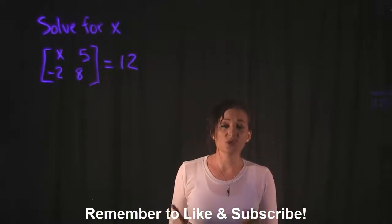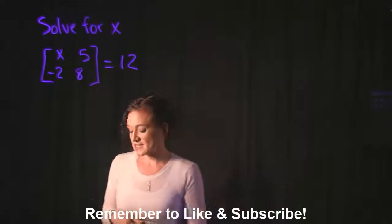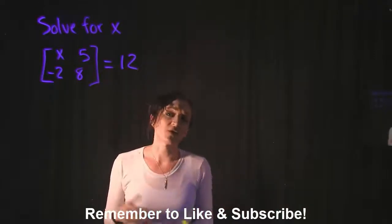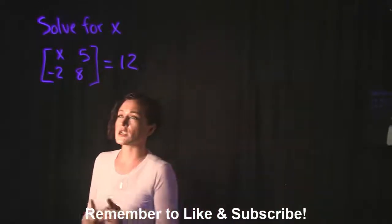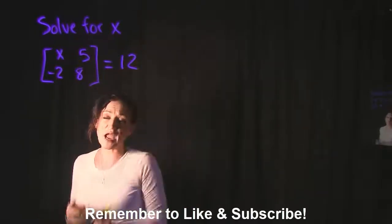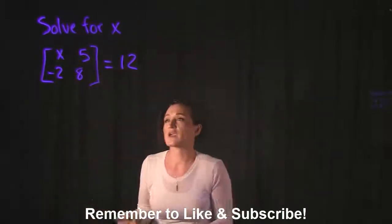What we're actually going to do in order to solve for x is we're going to find the determinant of this matrix. Now when we find the determinant of a 2 by 2 matrix, this is the calculation that's going on. You take, you multiply the diagonals together and subtract them.